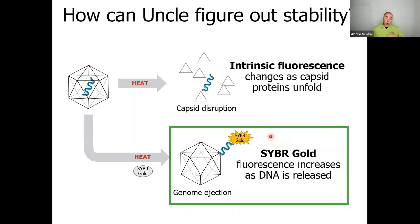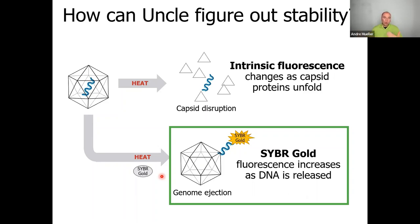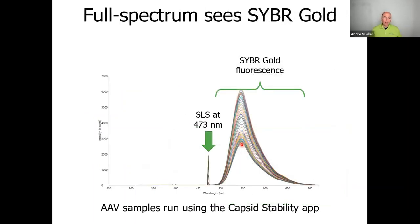Now let's switch to the other mode of characterizing AAV capsid stability: the genome ejection assay. In this case, we add a dye — SYBR Gold — to our preparation. This is an intercalating dye that interacts with nucleic acid — in the case of AAV, single-stranded DNA — and changes its fluorescence as more DNA is present. By monitoring SYBR Gold fluorescence during a temperature gradient, we can assess how much DNA is being released. The raw data shows fluorescence from SYBR Gold increasing as temperature rises, reflecting genome ejection from the capsid.